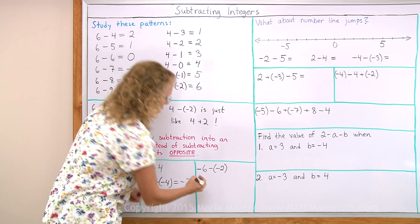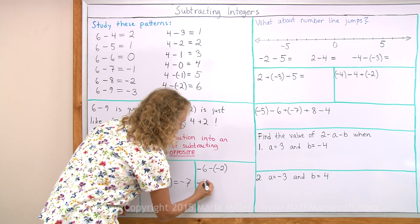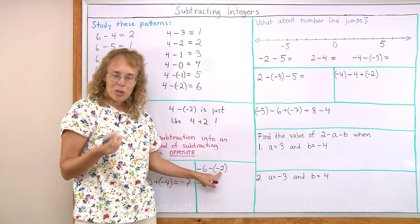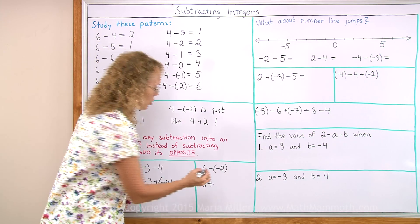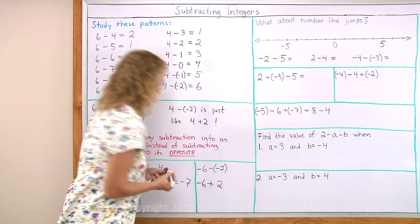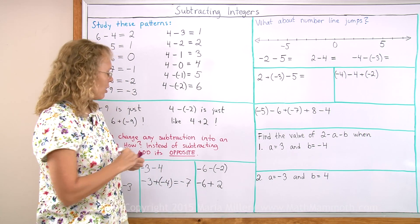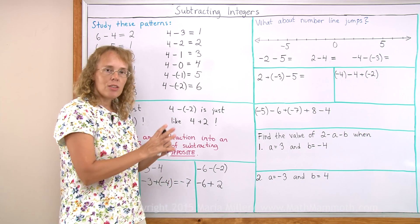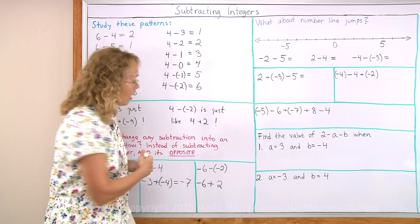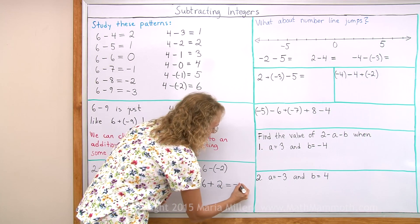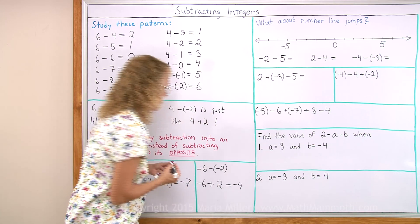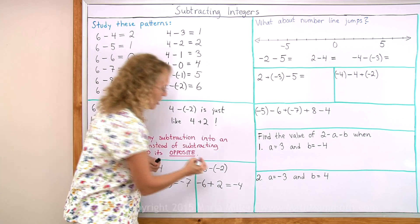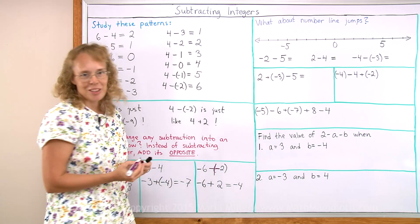Over here, the negative 6 won't change. This changes into an addition, and the minus 2 or negative 2 changes into a 2. So now I have negative 6 plus 2 — negative 6 counters and 2 positive counters — so the negatives will win: negative 4. When you have this double negative, you can remember a shortcut that it changes into a big positive.